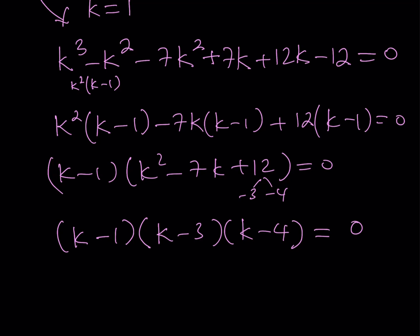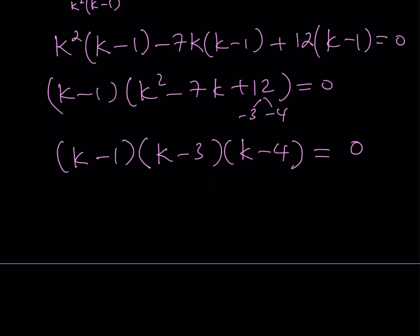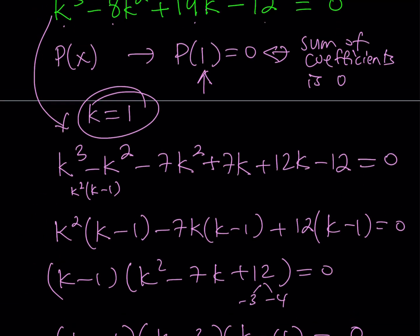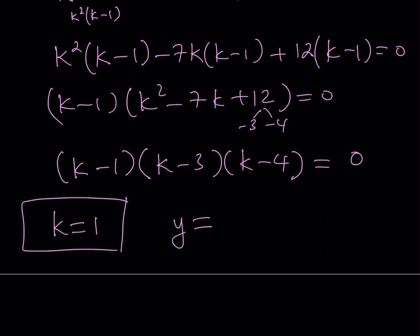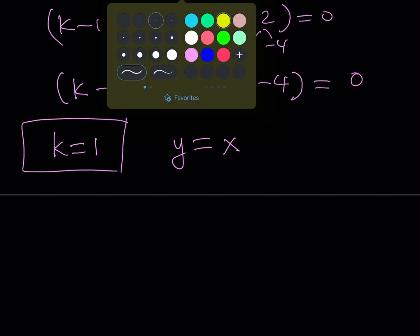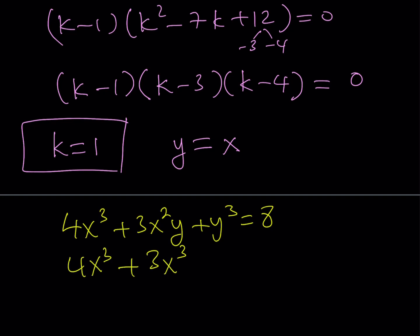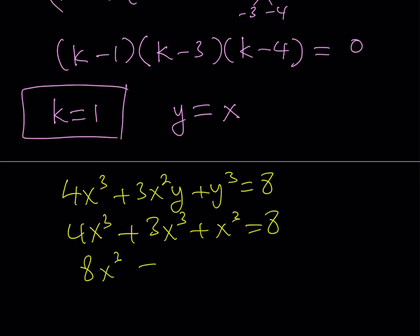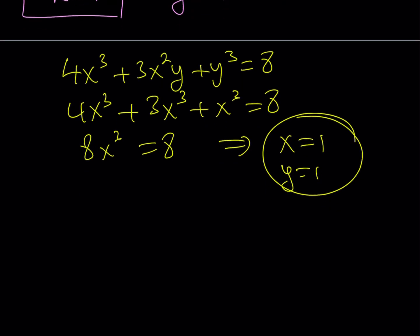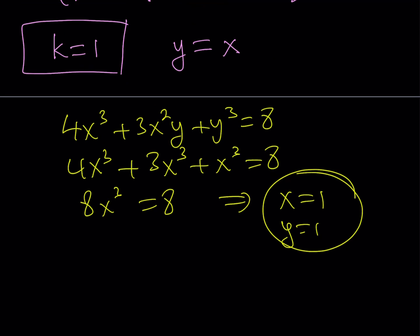So we have three k values. Starting with k = 1: since y = kx, this means y = x. Substituting into the first equation: 4x³ + 3x³ + x³ = 8, giving 8x³ = 8, so x = 1 and y = 1. Our first solution is the ordered pair (1, 1).